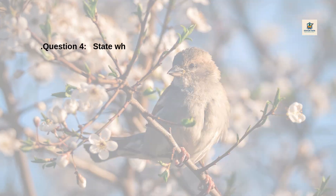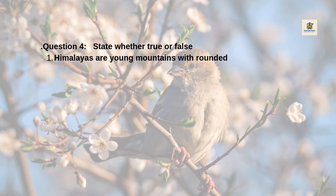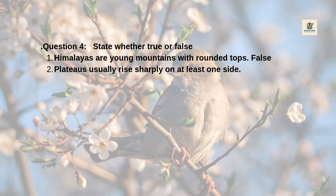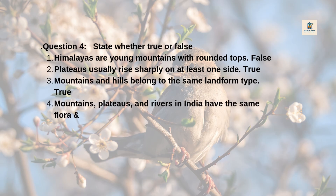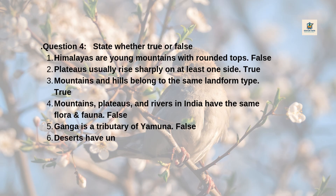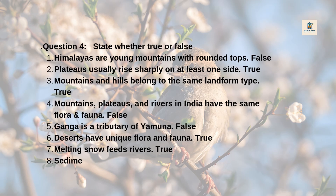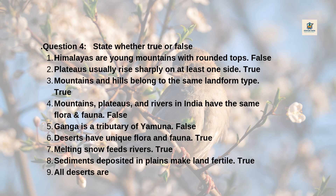Question 4: State whether true or false. 1. Himalayas are young mountains with rounded tops — False. 2. Plateaus usually rise sharply on at least one side — True. 3. Mountains and hills belong to the same landform type — True. 4. Mountains, plateaus, and rivers in India have the same flora and fauna — False. 5. Ganga is a tributary of Yamuna — False. 6. Deserts have unique flora and fauna — True. 7. Melting snow feeds rivers — True. 8. Sediments deposited in plains make land fertile — True. 9. All deserts are hot — False.